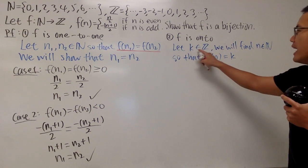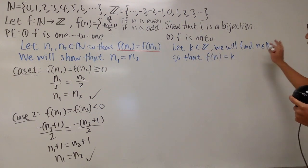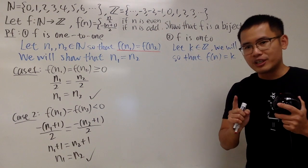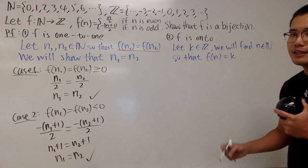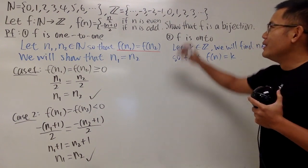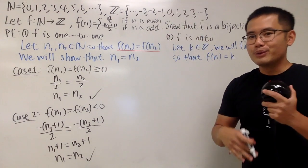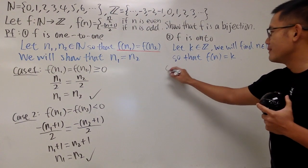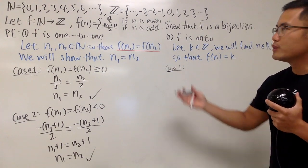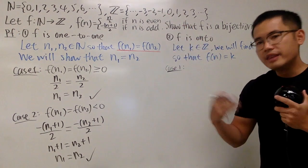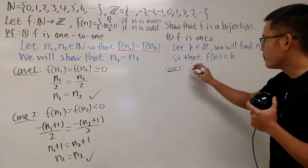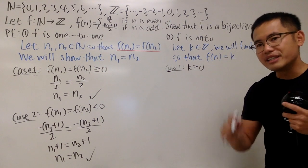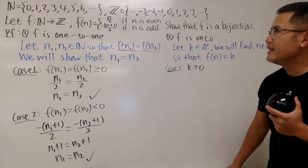So that f of that input will give us k. This right here is what we will do when f is being onto. And now, we just, again, have to make this happen. So let k in Z, we will find an n and we will have to write n. We will have to write n in terms of k. That's the whole key. Now, here is the deal. Again, if you look at Z, we have to look at two cases.